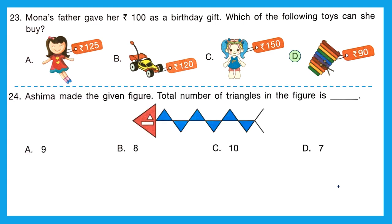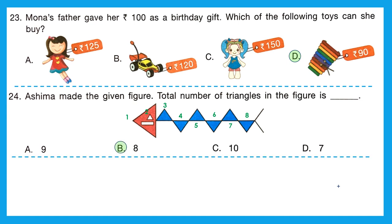Question 24: Ashima made the given figure. The total number of triangles in the figure is: counting 1, 2, 3, 4, 5, 6, 7, 8 — total number of triangles is 8. The right option is option B, 8.